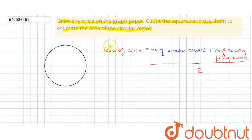So number of squares covered is coming to be 33. Now we will count total number of squares fully covered. So squares that are fully covered are these squares.